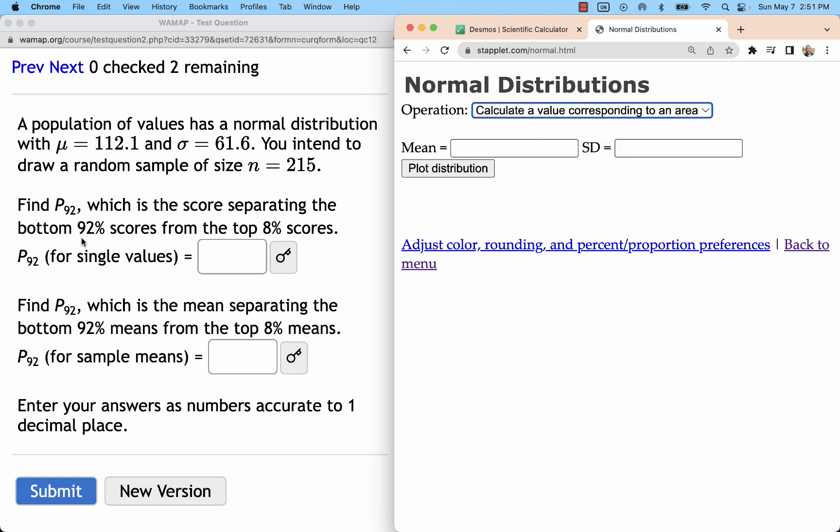We're starting with an area of 0.92, 92% for that left tail. We're going to start with single values first, comparing individual to individual. We just put in our original mean and standard deviation.